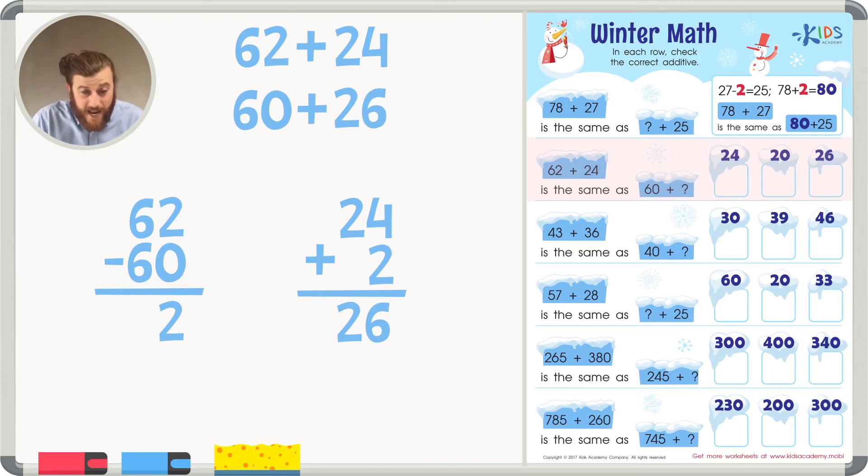And that is, of course, the same as 62 plus 24. So the correct answer is 26. 26 is the correct additive. Remember, whatever you take away or add to the other side, you have to do the opposite to the other number. Let's look at another problem.